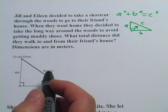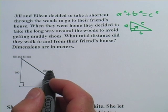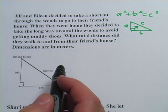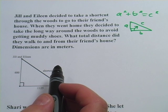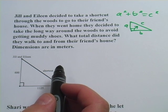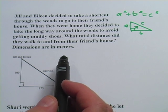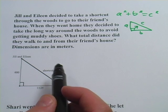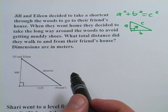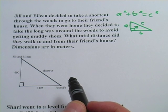Well let's take a look at this first problem and see how the Pythagorean theorem can be used. This one says, Jill and Eileen decided to take a shortcut through the woods to go to their friend's house. When they went home, they decided to take the long way around the woods to avoid getting muddy shoes. What total distance did they walk to and from their friend's house? Dimensions are in meters.